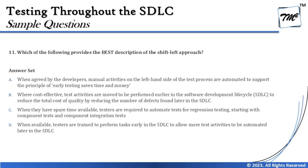Option B says: where cost-effective test activities are moved to be performed earlier in the software development lifecycle to reduce the total cost of quality by reducing the number of defects found later in the SDLC. This is a crisp and clear definition — testers involved early can reduce defects, cut the cost of fixing them, and reduce overall cost of quality. This looks like a very sensible option.